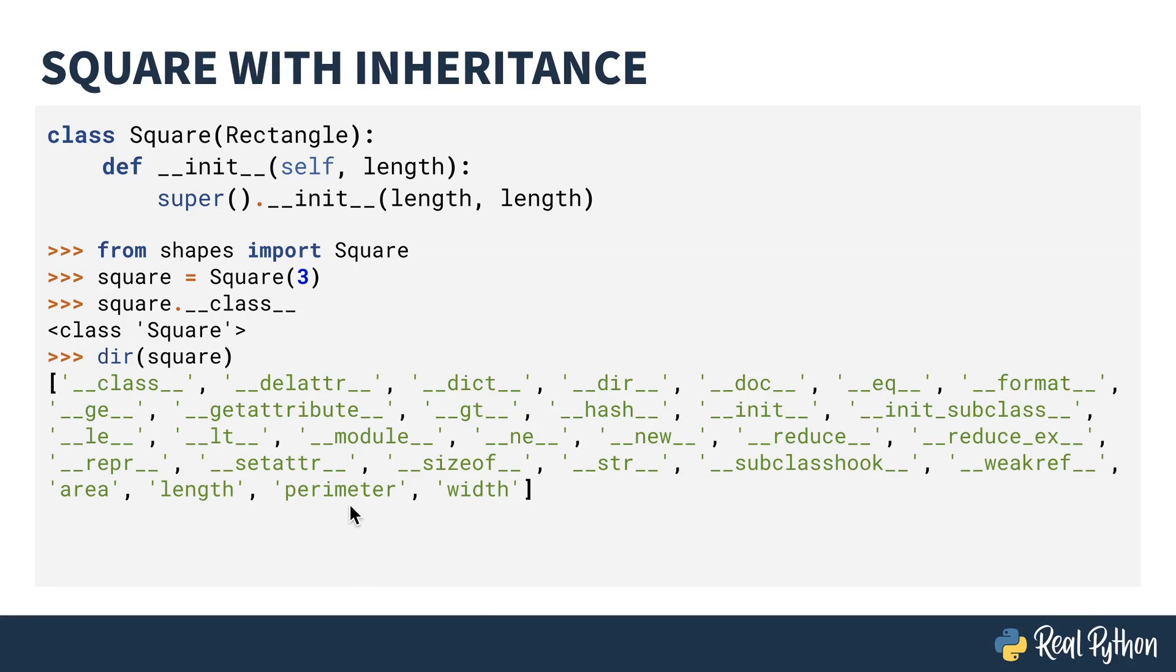I can also look at the basis attribute of the class attribute. This can tell you where your inheritance is from. Because square inherits from rectangle, the basis value shows the rectangle class.